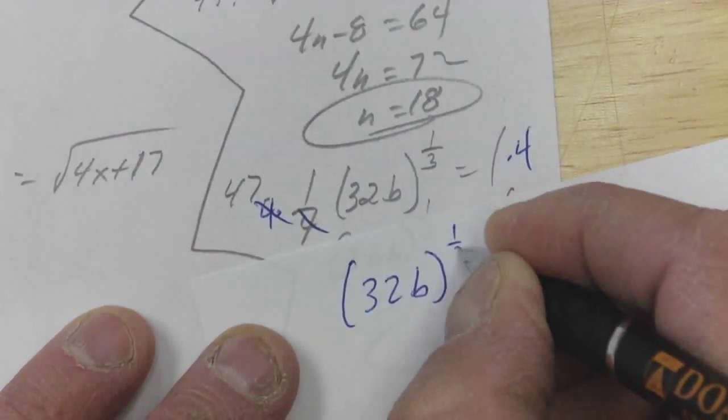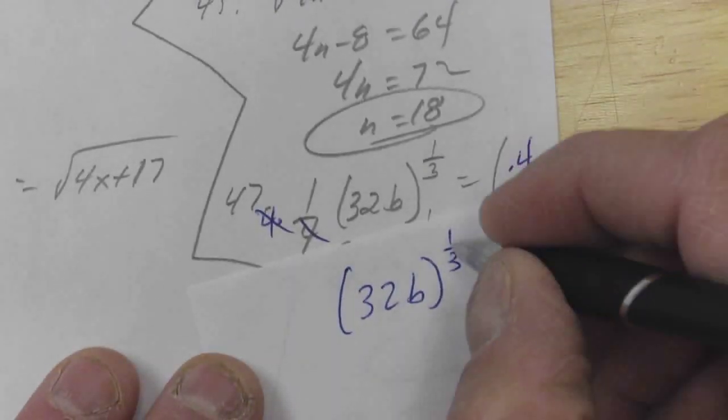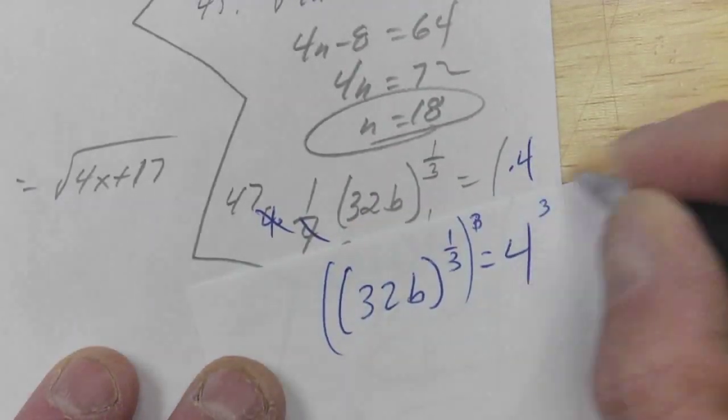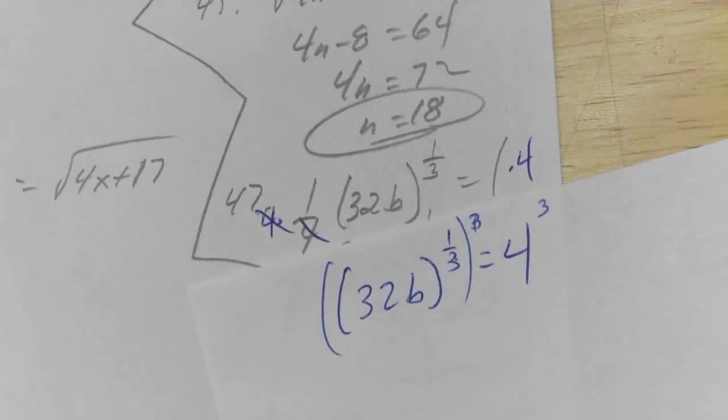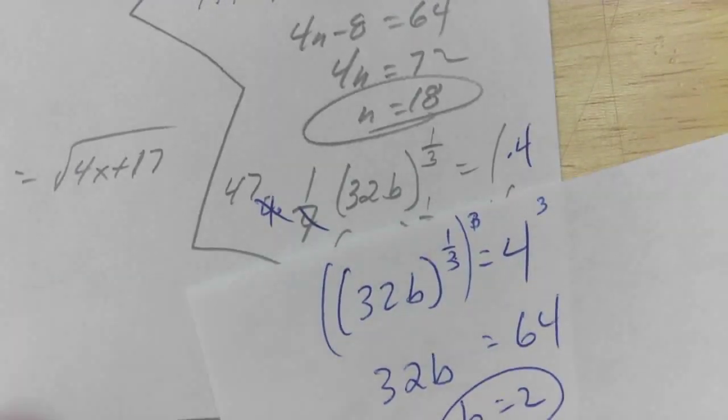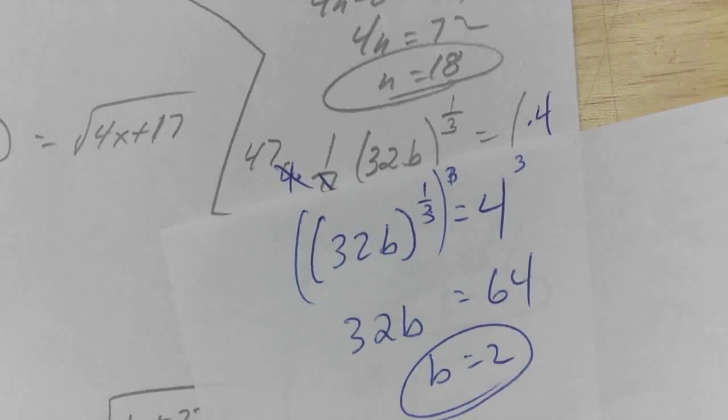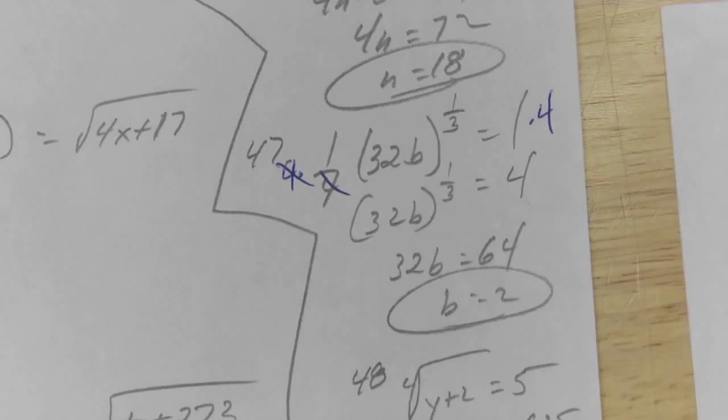So now what do I do to both sides? Cube it, because the one-third power is the cube root. Or if I raise both sides to the third power, three times one-third gives me one. So then I just end up with 32b raised to the fourth power is 64, and there's where I get my b is 2. We didn't change degree much, so I'm not too worried about an extraneous root. I don't have two, but I'm just going to plug in real quick just to check. 32 times 2 is 64 raised to the one-third power gives me four. One-fourth times four gives me one. Cool.